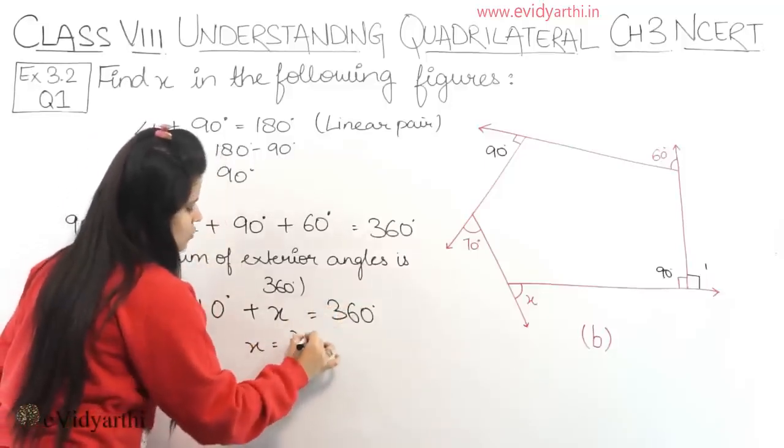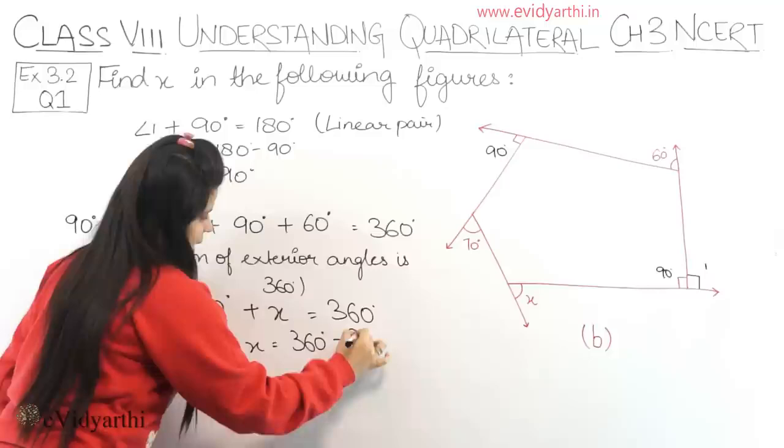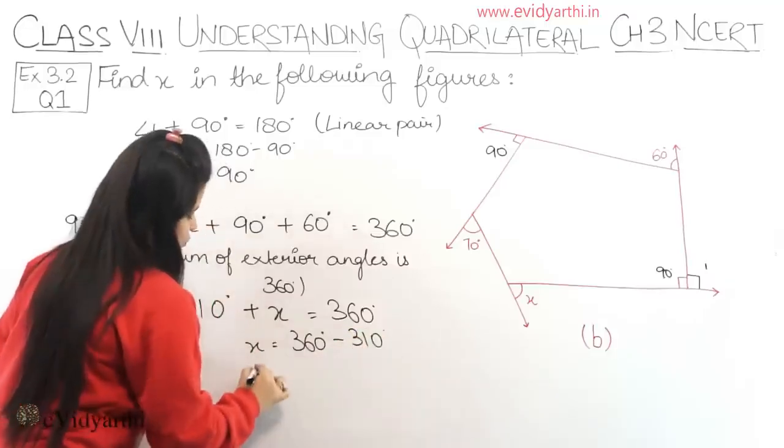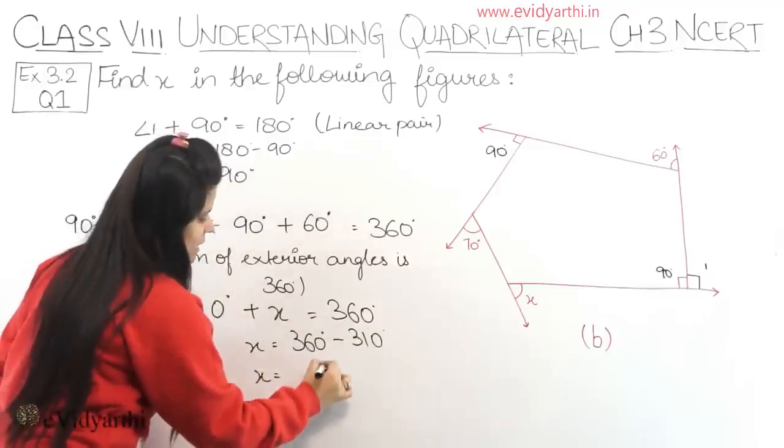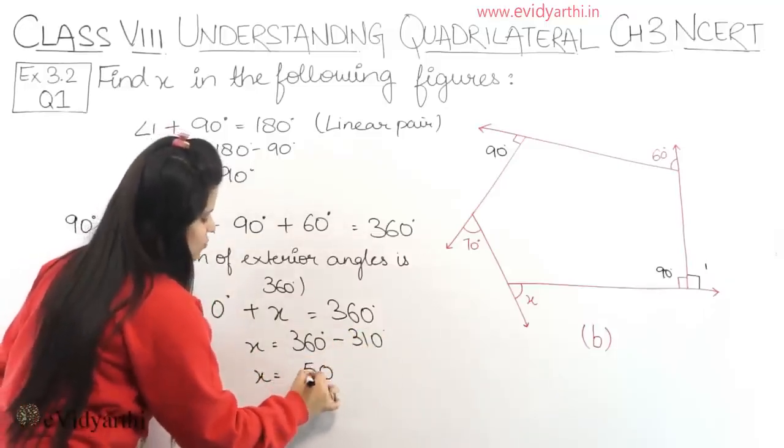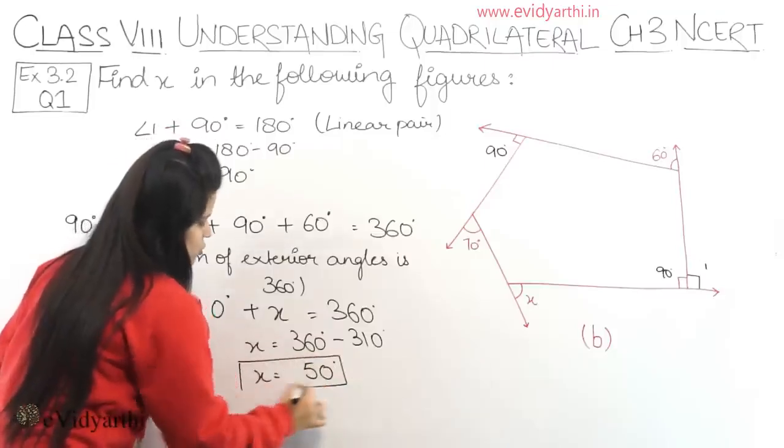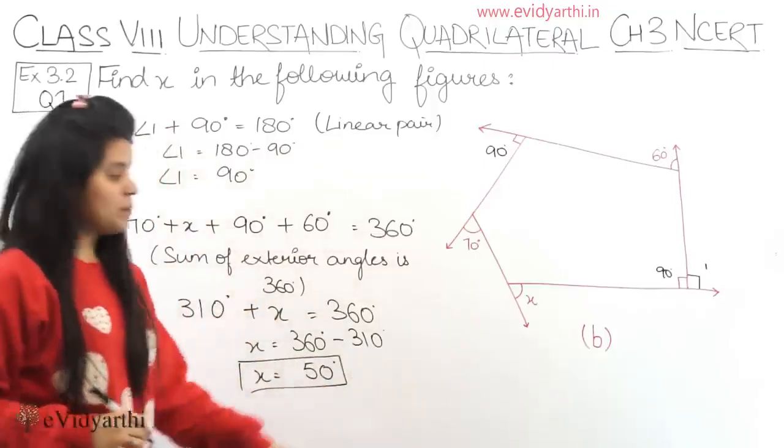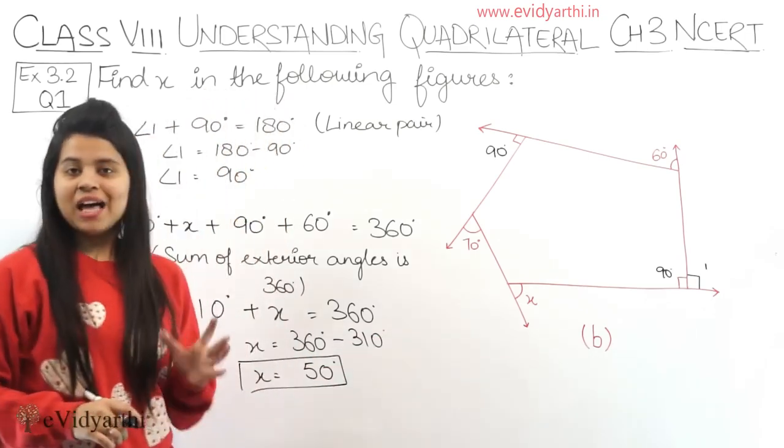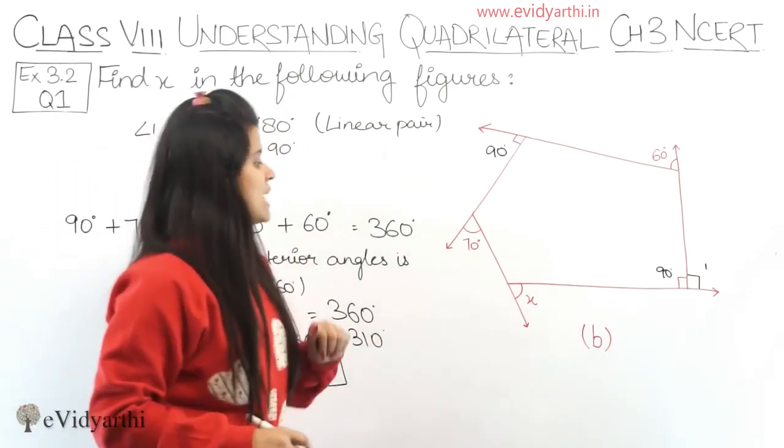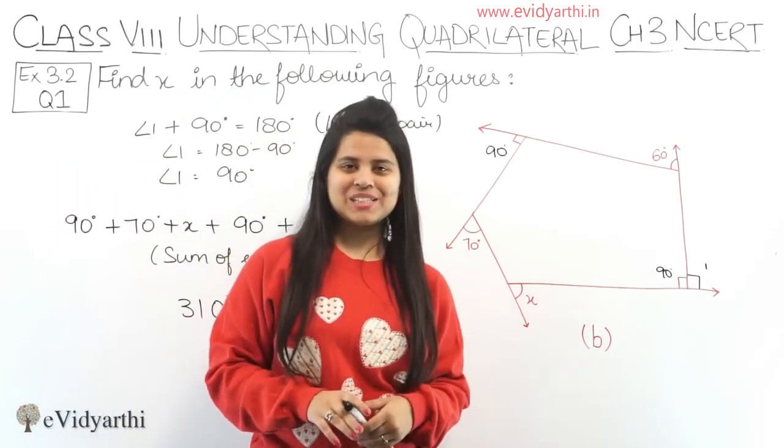Now x equals 360 minus 310 degrees. So x equals 0 minus 0 is 0, 6 minus 1 is 5, and 3 minus 3 is 0. So x equals 50 degrees. We have found x and it is 50 degrees. This was the last part of this question. Now let's come to the next question.